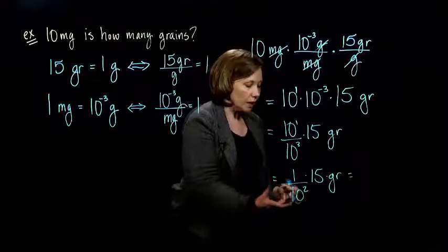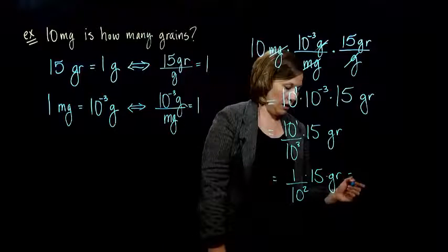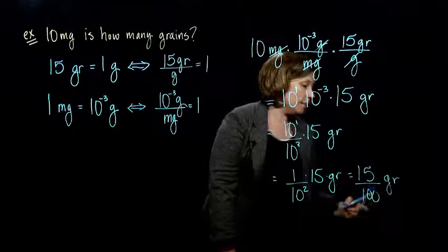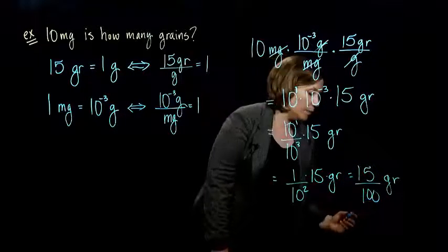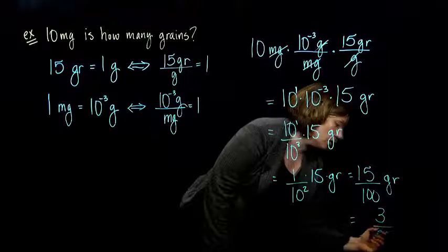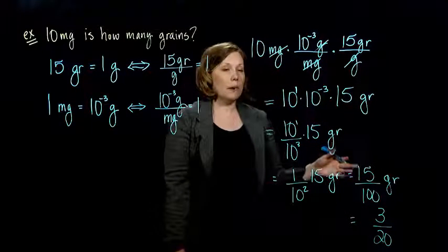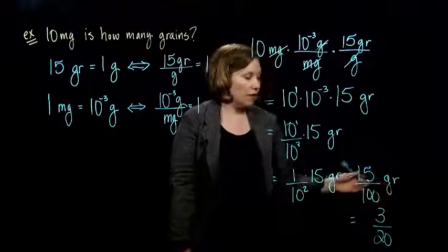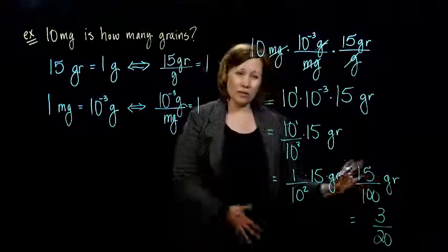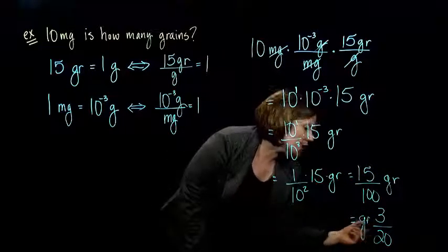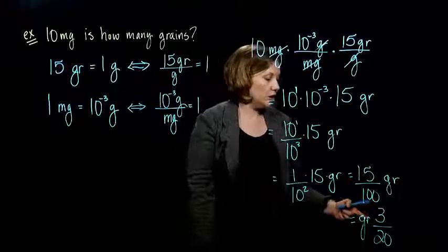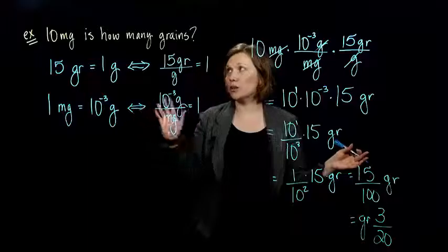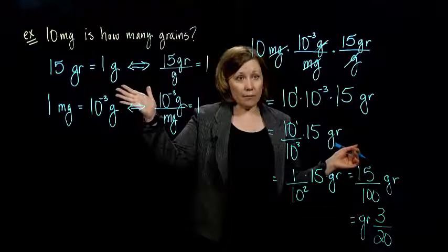Okay. But 10 squared is 100. So, I have 15 over 100. And I have grains. And now I want to reduce this fraction, right? 5 goes into both. So, that leaves me with 3 over 20 for my fraction. Remember, in the apothecary system, we use fractions. We don't use decimals. So, we wouldn't write 0.15. That would be incorrect. We write 3 over 20. And then, also remember that little tricky thing. We write the units of measure first. So, I'd write GR 3 over 20. So, that is our conversion between 10 milligrams to grains.